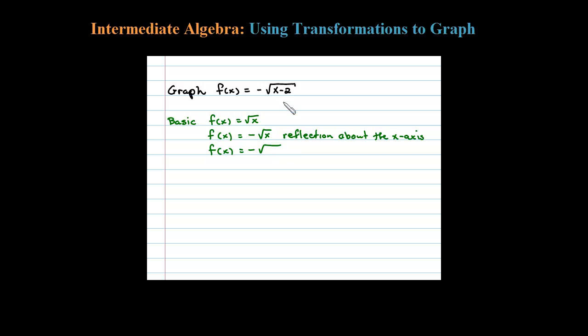When you subtract 2 inside the argument of the square root, that's a horizontal translation—a shift right two units. If we had plus 2, that would be a shift left two units.